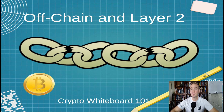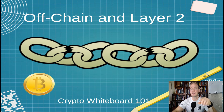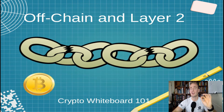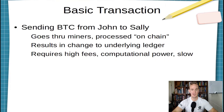Hey everyone and welcome back to Crypto Whiteboard 101, the series in which I answer your most important questions about cryptocurrencies in less than two minutes. And today we are answering the question: what is an off-chain or a layer 2 settlement mechanism?